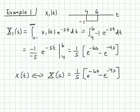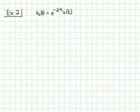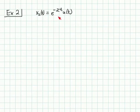So that was a pretty straightforward example. Now let's consider a second example of computing the Laplace transform. We have x2(t) equals e^{-2t} u(t).